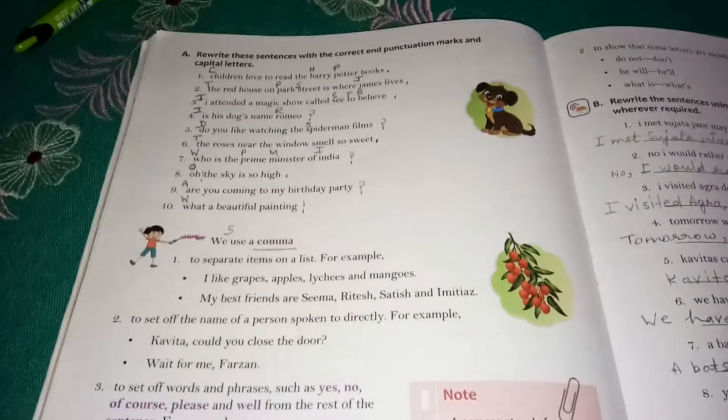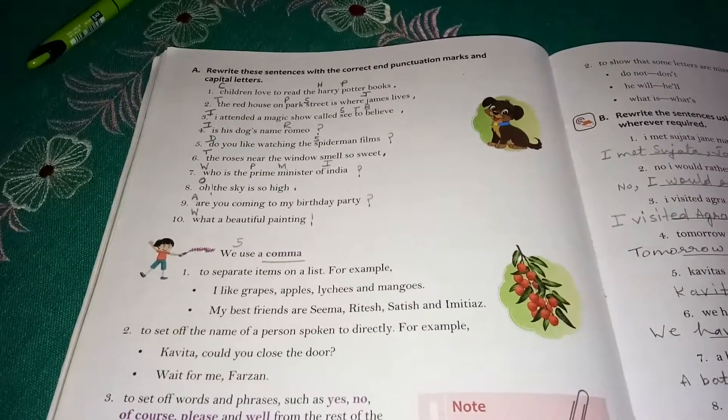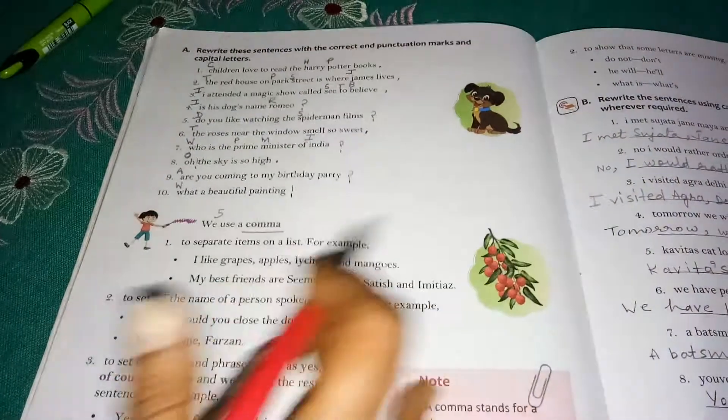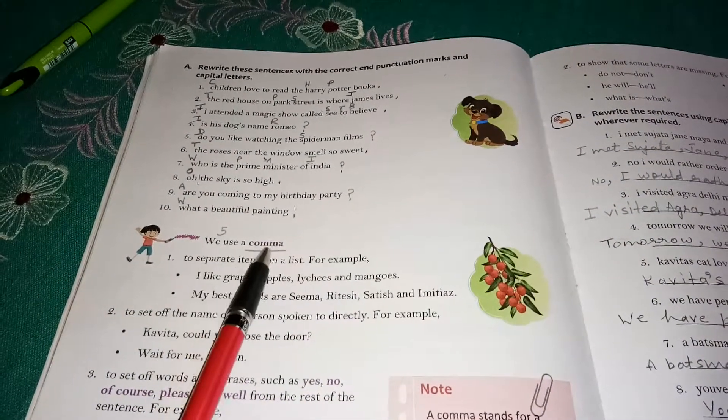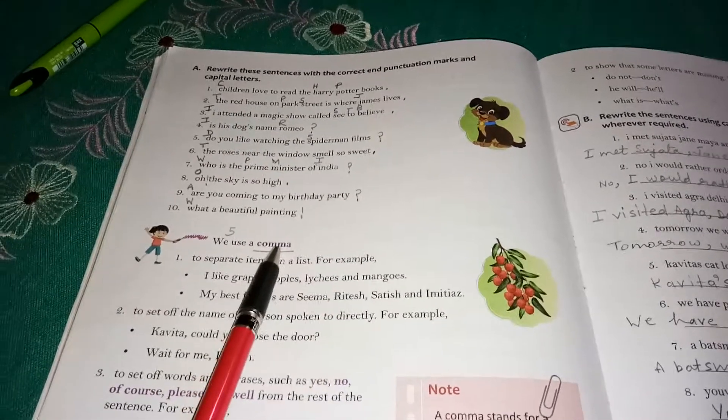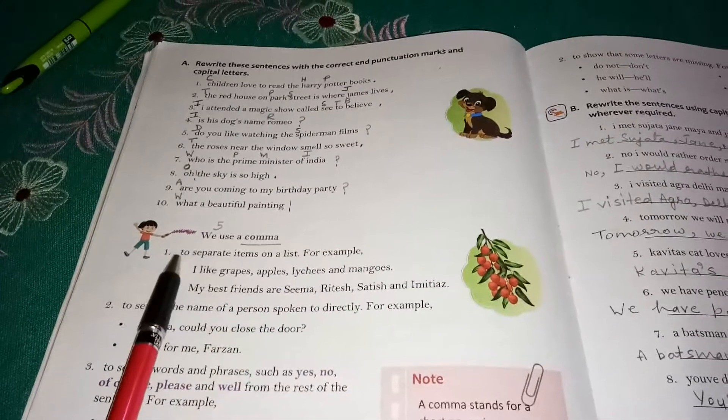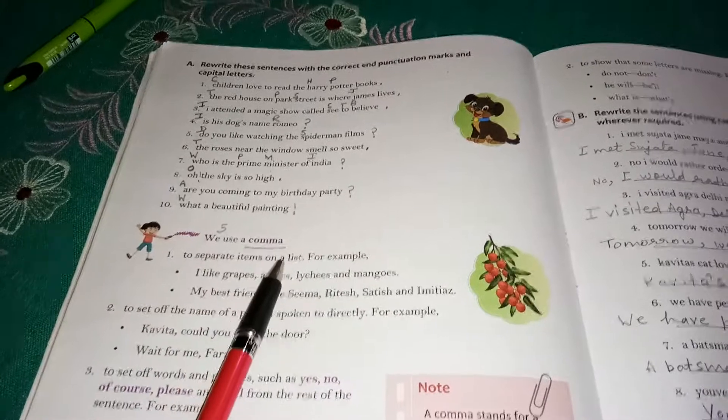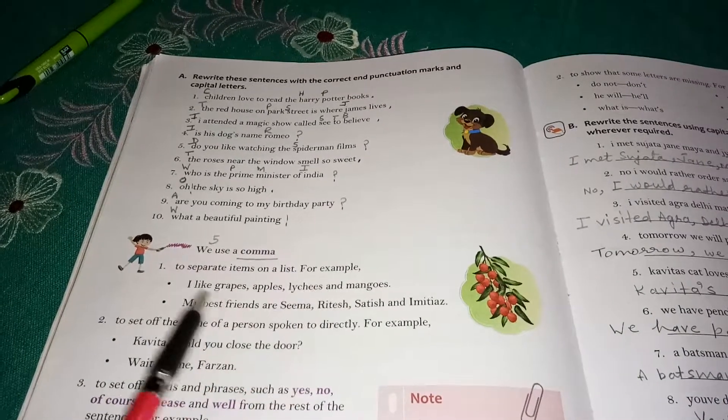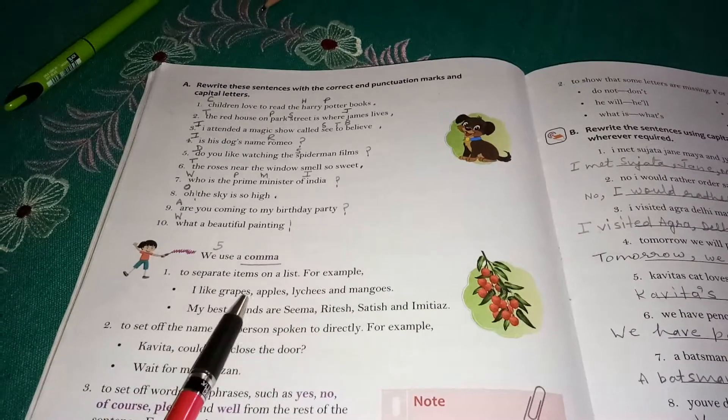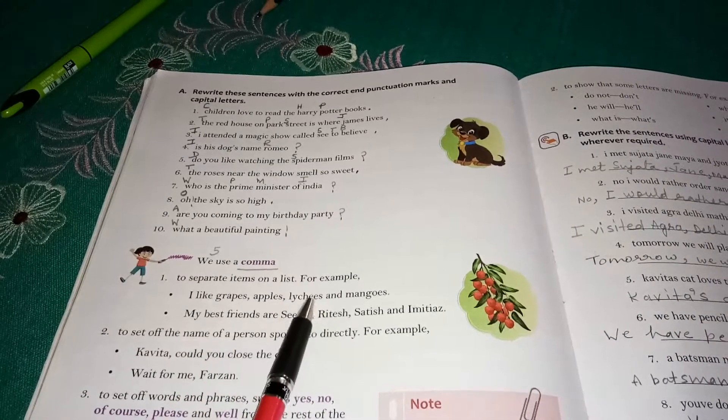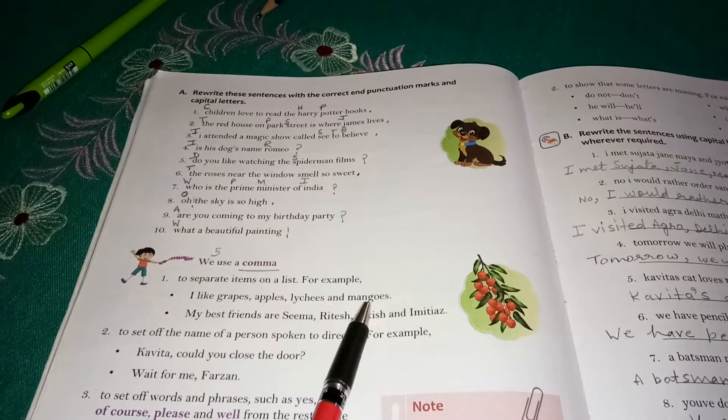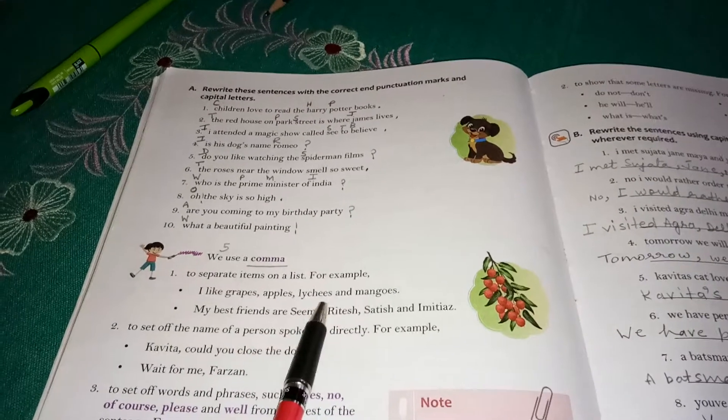Hello children, we are learning marks of punctuation. Next mark of punctuation is comma. We use a comma to separate items on a list. For example, I like grapes, apples, leeches, and mangoes. You all must have eaten these fruits.